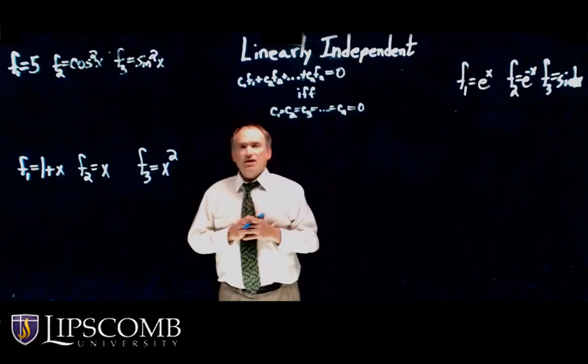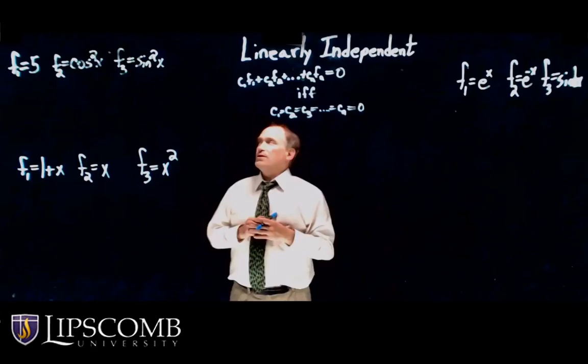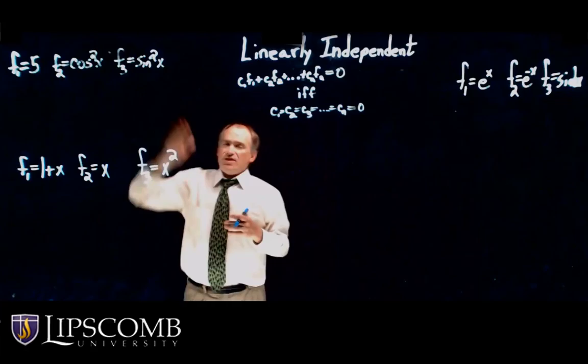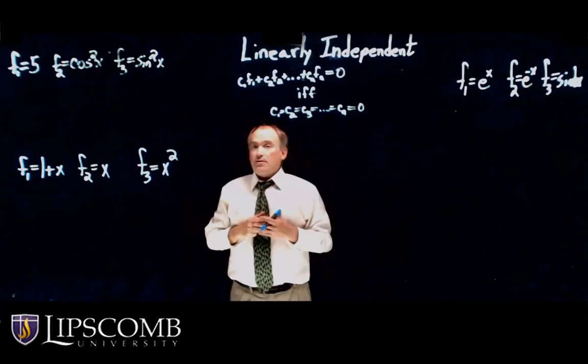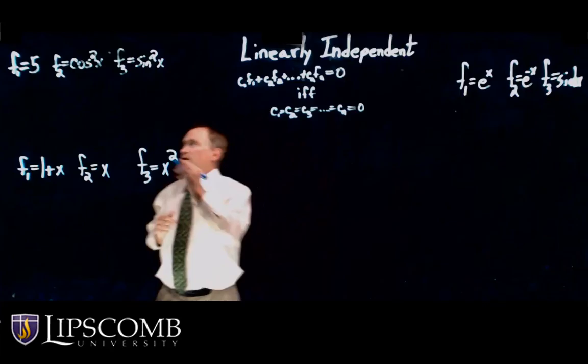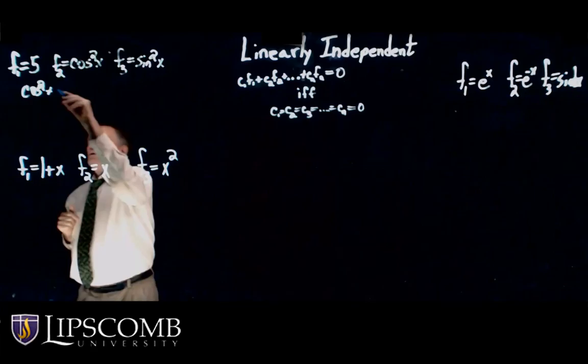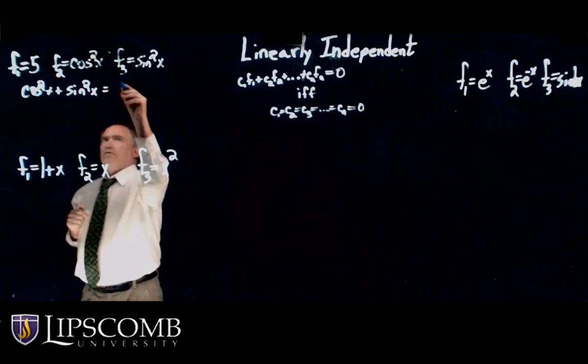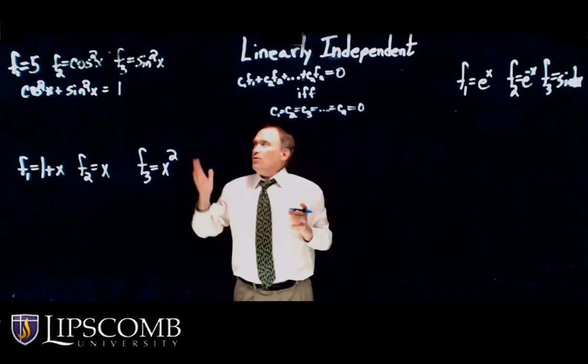So I picked out three examples. Let's see if these sets of functions are linearly dependent or linearly independent. The first one I have is 5, cosine squared x, sine squared x. So the question is, are these linearly independent or linearly dependent? Now, I do remember that cosine squared x plus sine squared x equals 1.